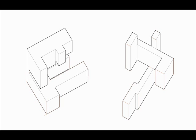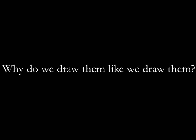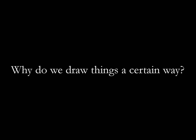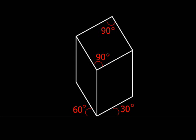So you're asking me basically why do we need the 90 degree lines, like the axonometric and the isometric lines? Like why do we draw them like we draw them? Why do we even have conventional things? Like when we draw, why do we draw things a certain way? Like in the axonometric drawings, why do we have specific angles? What's the point?